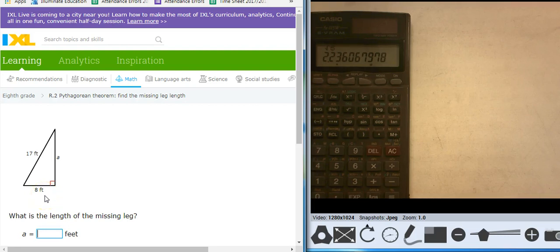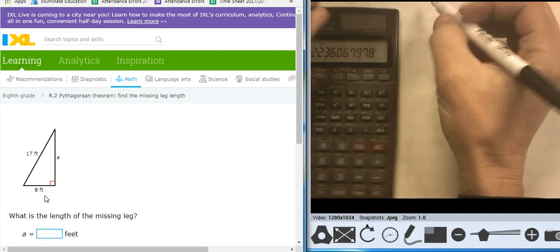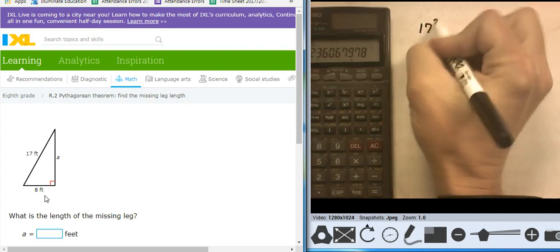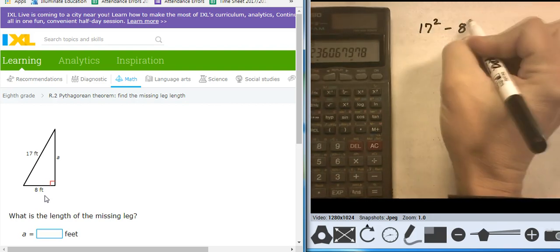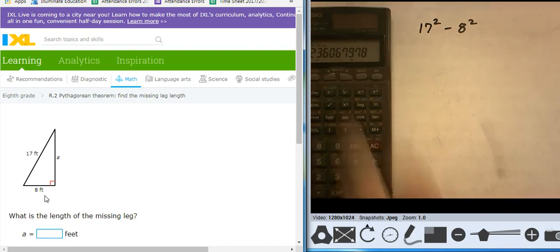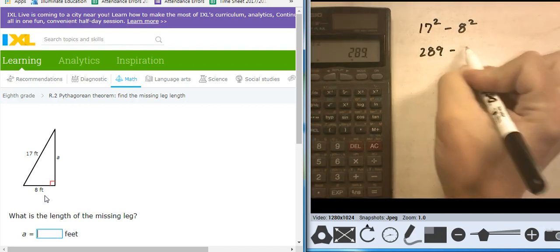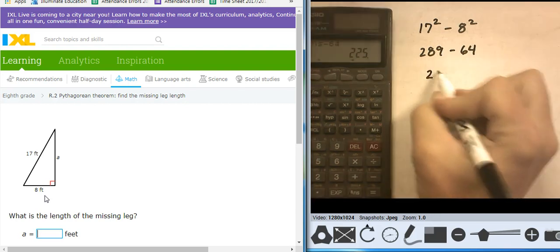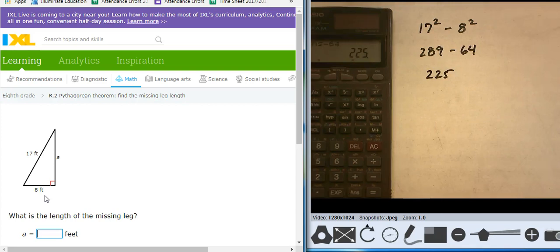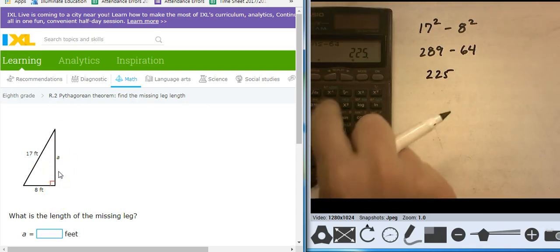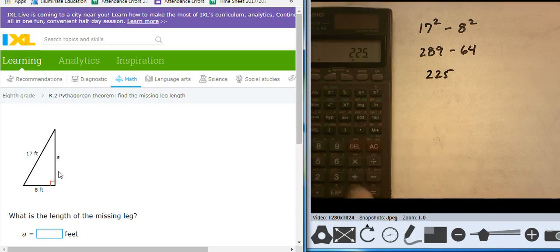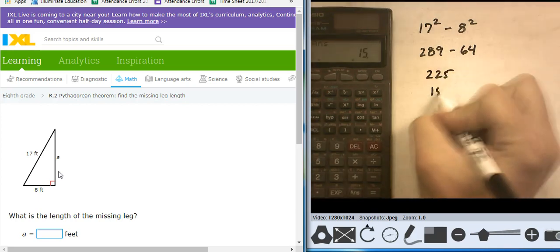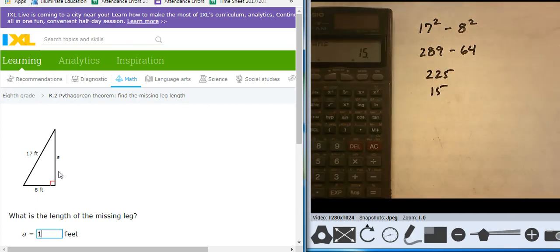So I'm going to square each of those numbers, then I subtract them and take the square root. This is going to be 17 squared minus 8 squared. 17 squared is 289 minus 64, takes me to 225. Now that's way too big to be the length of that missing leg right there, but if I take the square root of it, the square root of that takes me to 15, and that's the missing leg, so 15.